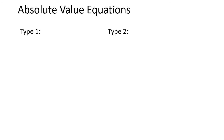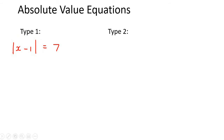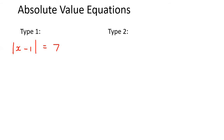In the first type, they'll give you something with an absolute value — so for example, x minus 1 equal to 7. What's important about this type is that the absolute value is already by itself. There isn't a number in the front, or some type of fraction, or a 2 plus something. The absolute value is already by itself.